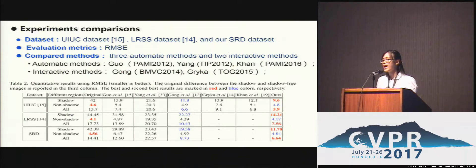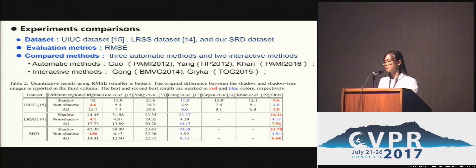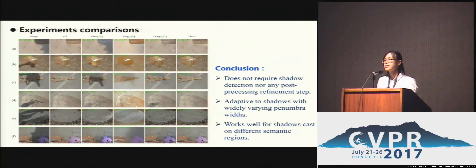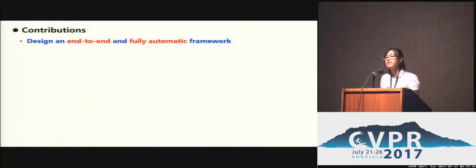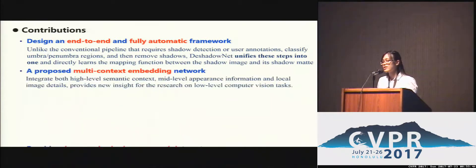Here are some quantitative comparisons demonstrating that our method outperforms compared methods across all evaluated metrics. The following shows qualitative comparison results. Since our method doesn't require shadow detection, it is adaptive to shadows with varying penumbra widths, shown in row E, and it also works well for shadows cast on different surfaces, shown in row F. The last column shows our results. Apart from these contributions, we have also provided a large-scale shadow removal dataset.